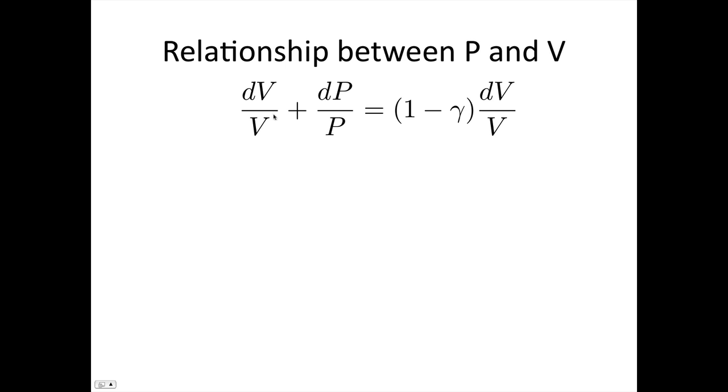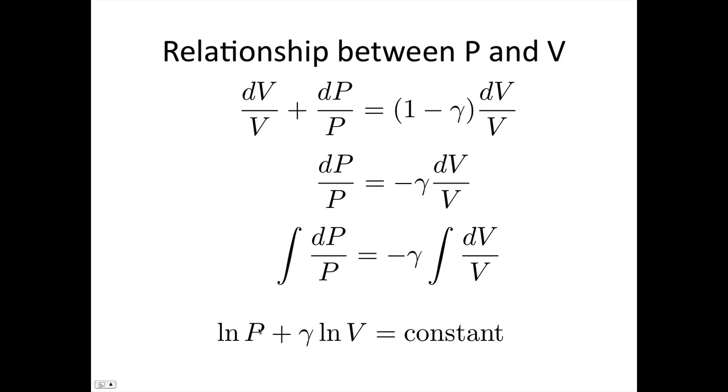So we've got dV over V plus dP over P is equal to (1 minus gamma) dV over V. Let's put all the dVs together. This dV will cancel that dV. And we'll end up with dP over P is equal to minus gamma dV over V. Now we're just going to integrate everything. When we integrate 1 over x, we end up with log x. So integrating, we get log P plus gamma log V, moving this over to this side, is equal to some constant. We need the constant as we've done indefinite integrals.